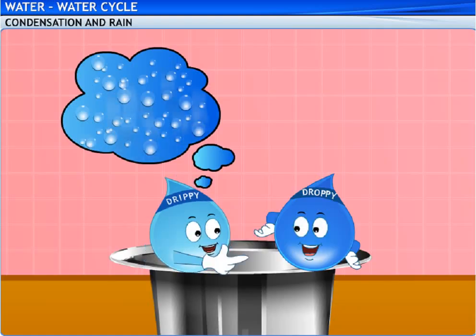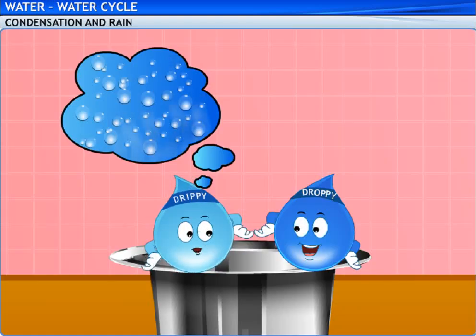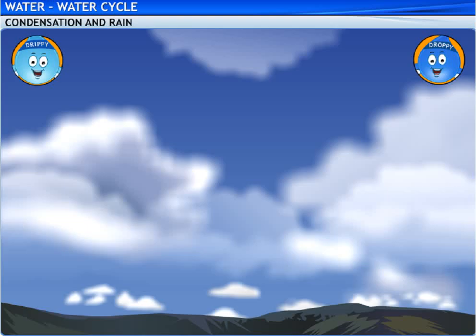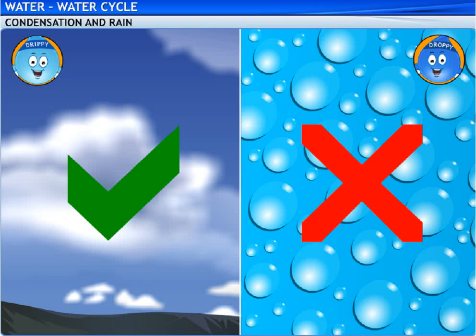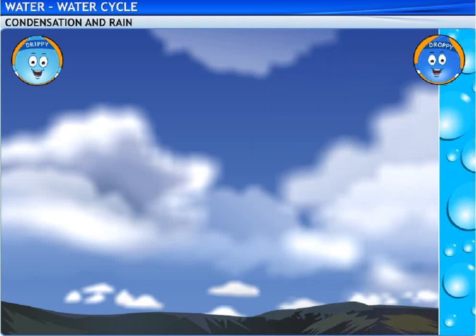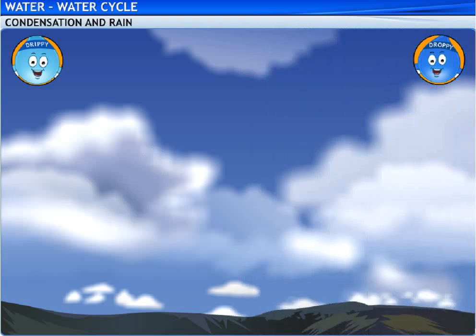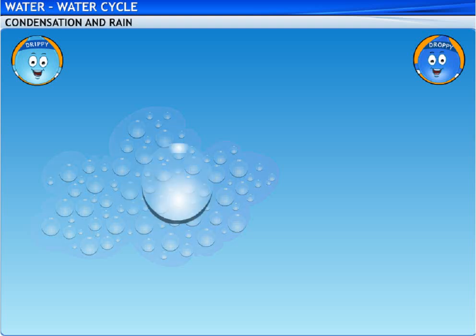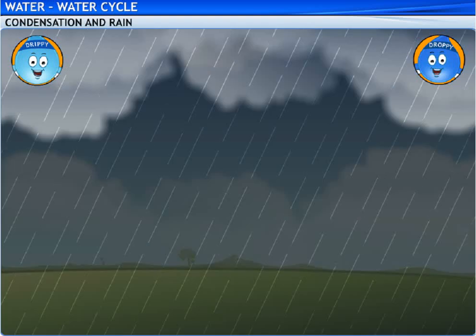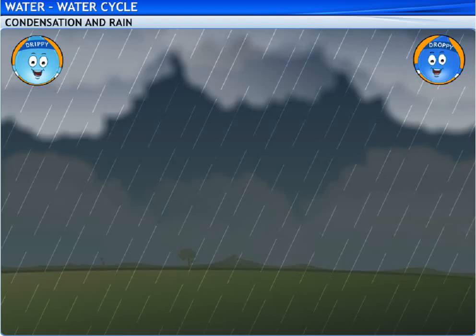I wonder how the sky must have looked with those millions of water droplets floating around. Well, the droplets appear as a cloud. Now if a billion water droplets are floating up there, it sure will appear like a crowd. Drippy, I said cloud, not crowd. You mean that the white, fluffy, cotton-like stuff one sees in the sky actually contains tiny droplets of water? Yes. And all these droplets collect to form bigger drops of water. Some of them may become too heavy to remain in the sky, and fall down as rain.